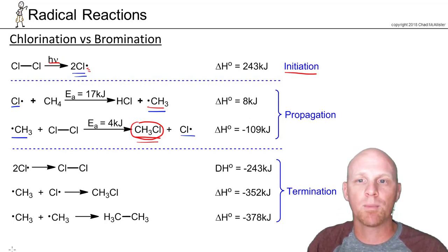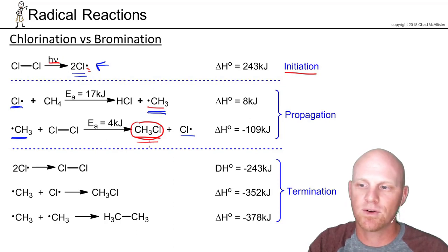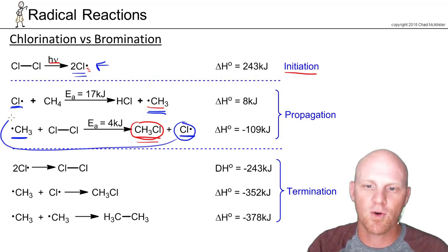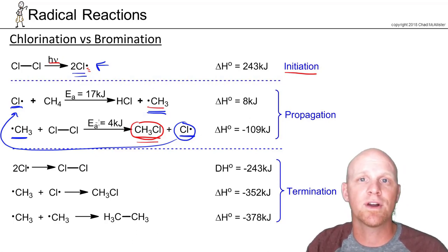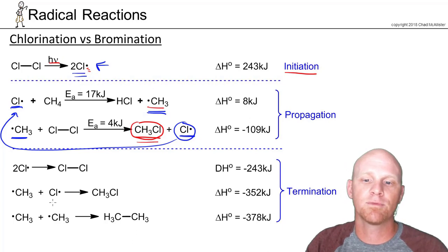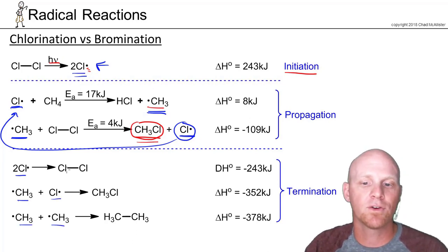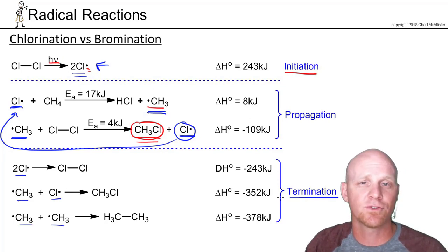I like to think of a radical reaction as a radical party. In the first step you've got to form radicals, and then you just want to keep the party going — one radical forms one radical. The chlorine radical formed goes back to repeat the first propagation step, which is why these two propagation steps repeat over and over. But all good parties must come to an end: eventually two radicals meet — two chlorine radicals, a methyl and chlorine radical, or two methyl radicals — and two radicals become zero. That's the hallmark of a termination step, which always decreases the overall concentration of radicals.